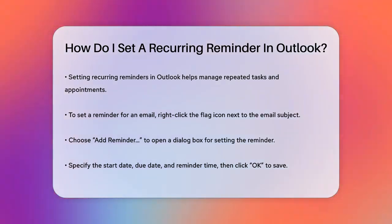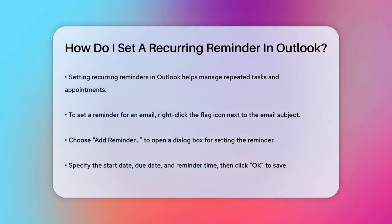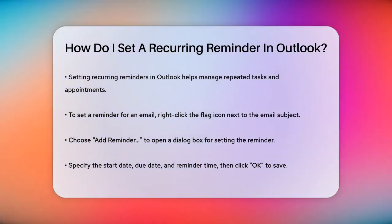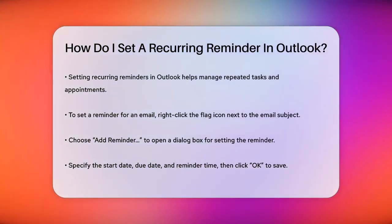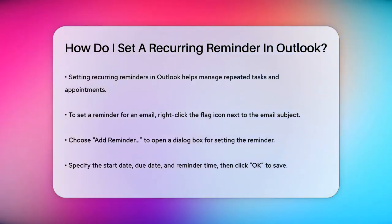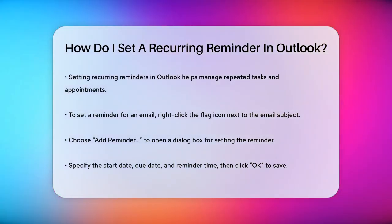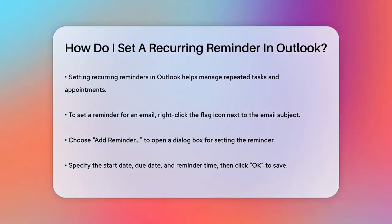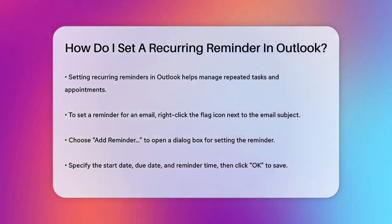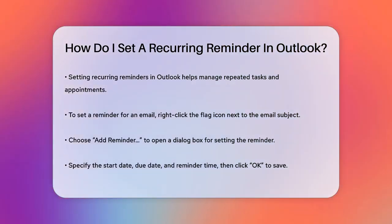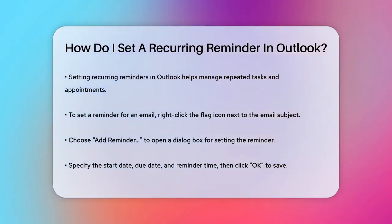First, let's talk about setting reminders for emails. If you need to follow up on an email, you can flag it for a reminder. Open Outlook, go to your inbox, and select the email you want to set a reminder for. Right-click on the flag icon next to the email subject line and choose Add Reminder. In the dialog box, set the start date, due date, and the reminder time. Click OK to save it.